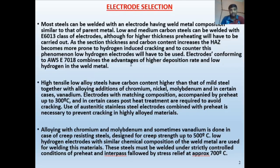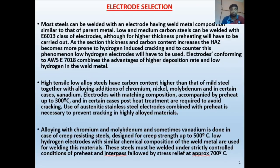For greater section thickness, preheating must be carried out. As section thickness and carbon content increase, the heat-affected zone becomes more prone to hydrogen-induced cracking. That is why a low hydrogen electrode must be used to reduce hydrogen. Electrodes conforming to AWS C7.01 combine the advantage of higher deposition rate with low hydrogen in the weld metal. For thicker sections, always use low hydrogen electrodes.